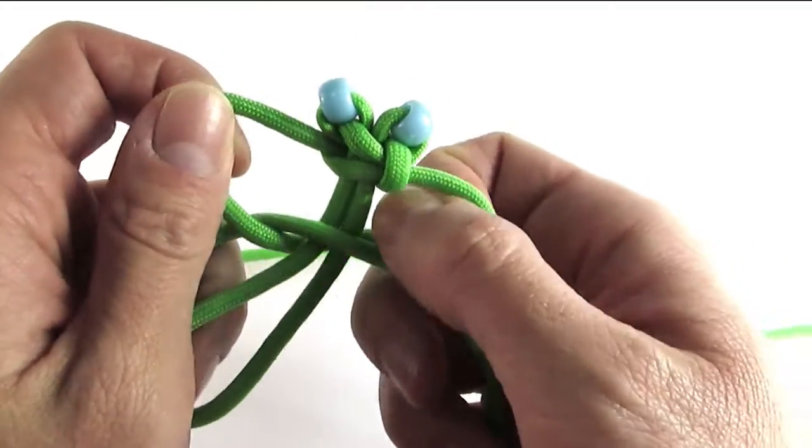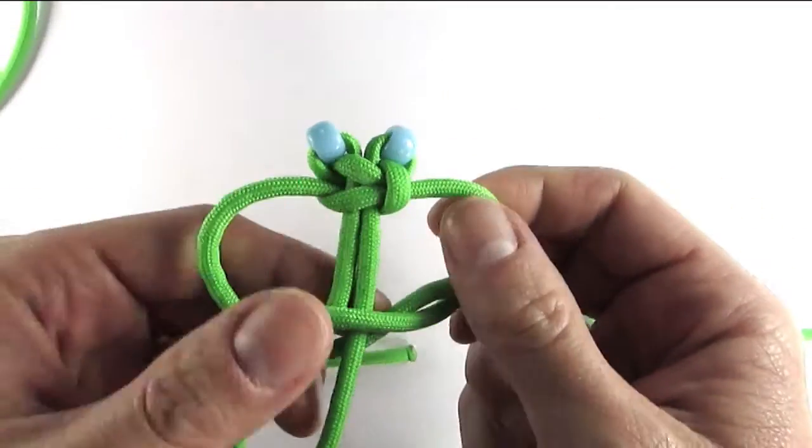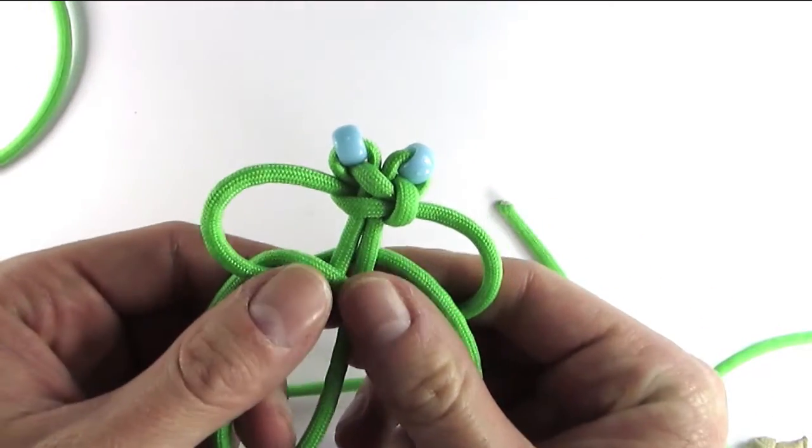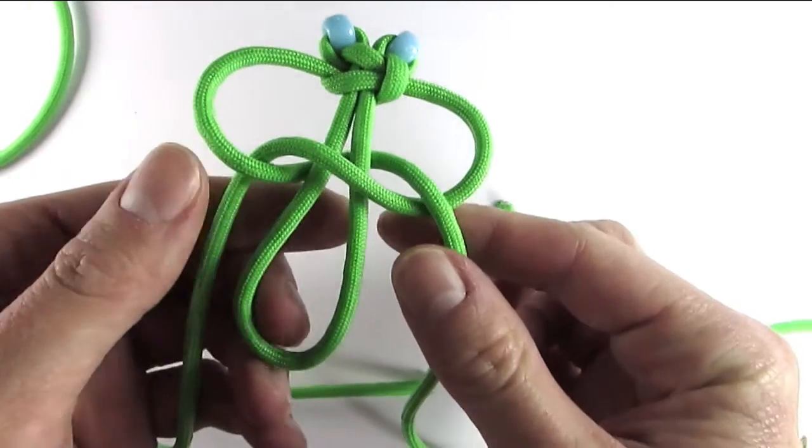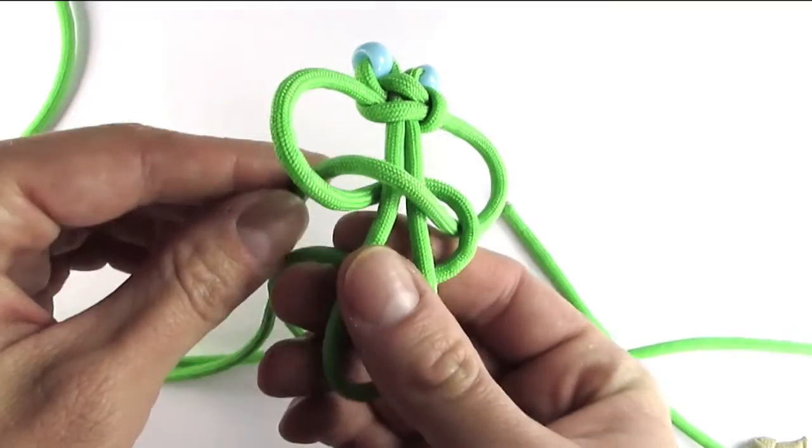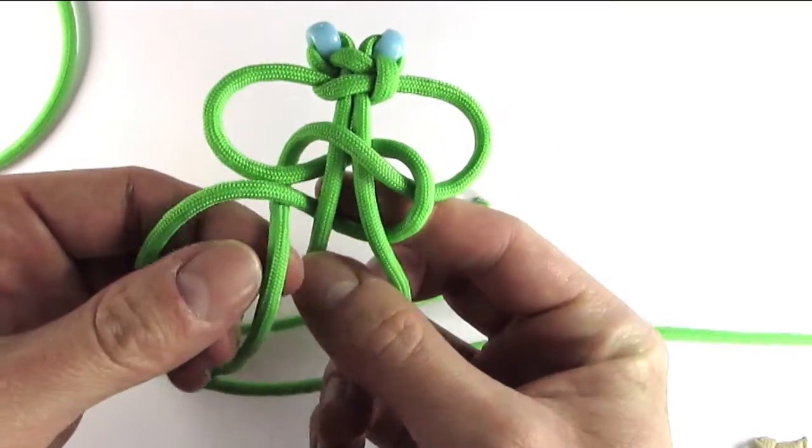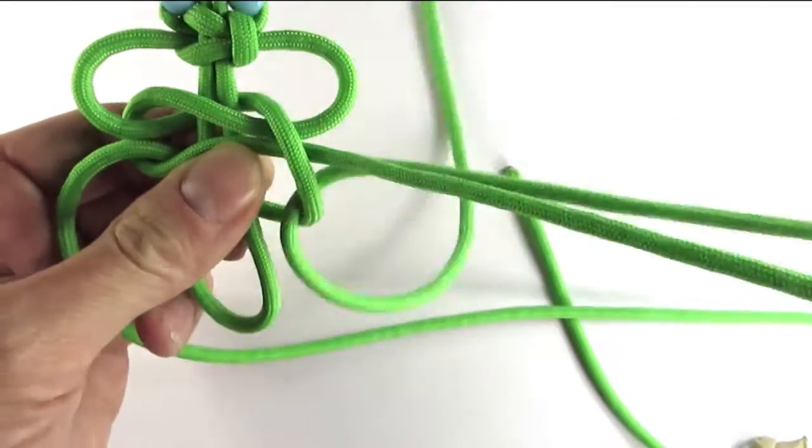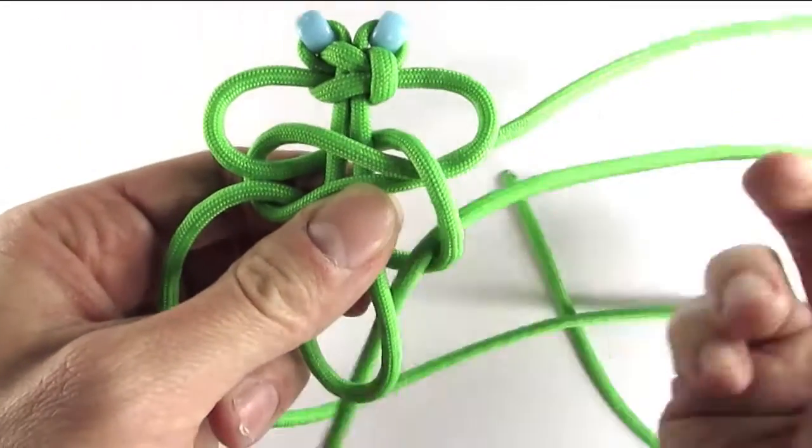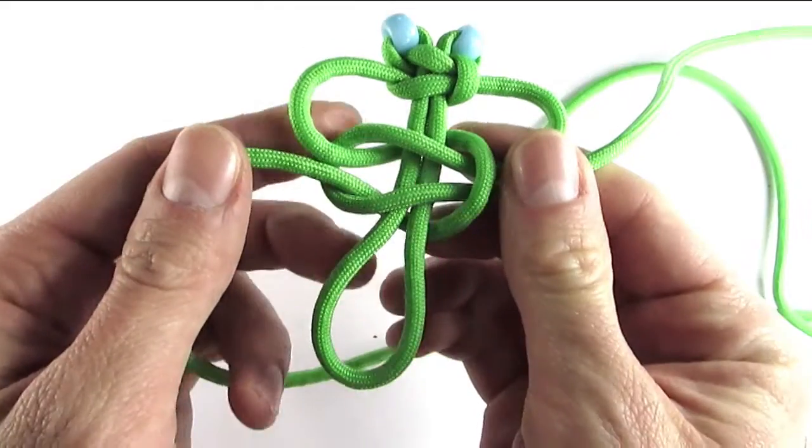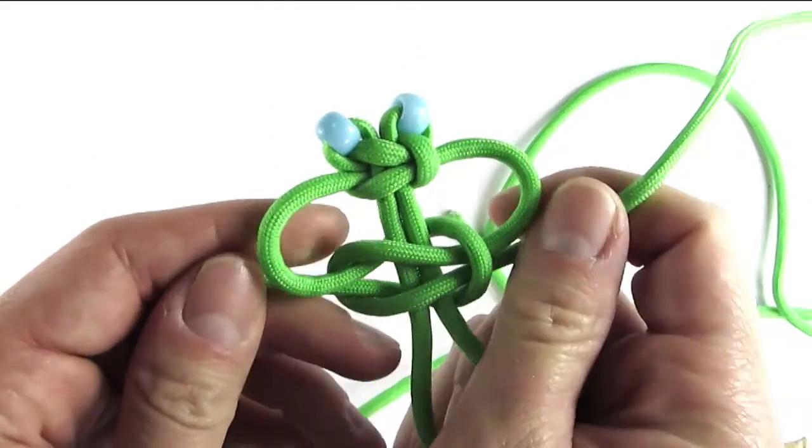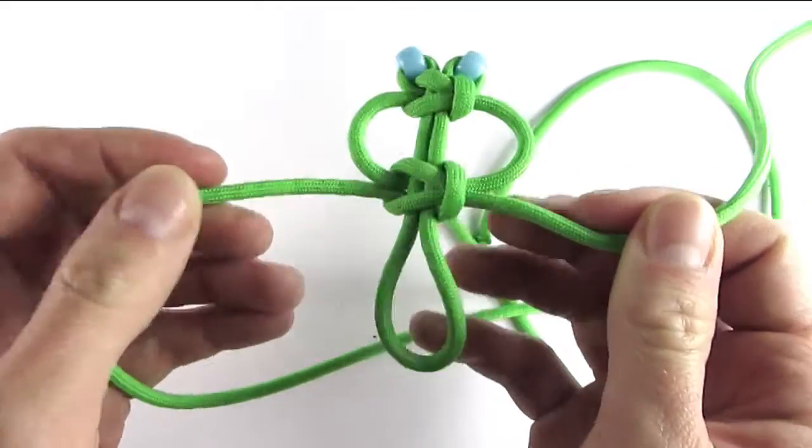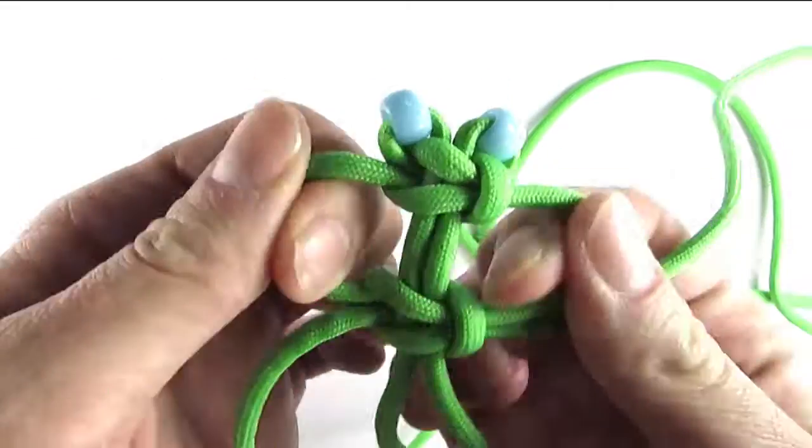Instead we are going to spread it out a bit. And then continue with a knot to the right. We are going to tighten this knot now and pull out the wings a bit.